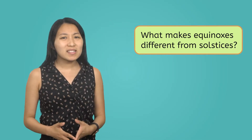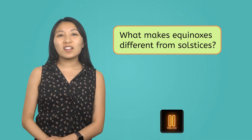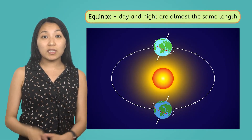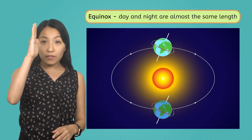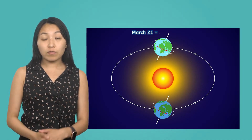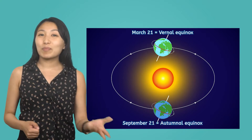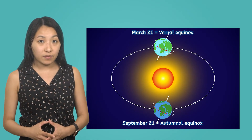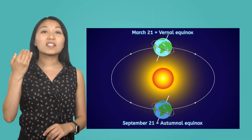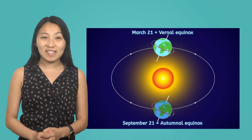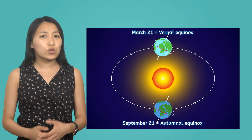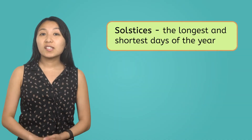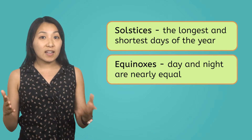So what about equinoxes? What makes them different from solstices? Pause the video and record your thoughts in your guided notes. Equinoxes are the times of year when day and night are nearly equal in length, because the Sun is positioned directly above the equator. In the Northern Hemisphere, these occur around March 21st, which is the vernal or spring equinox, and September 21st, which is the autumnal equinox. In the Southern Hemisphere, these seasons are opposite those of the Northern Hemisphere. Equinoxes happen because Earth's tilt positions the Sun directly over the equator, spreading sunlight equally between the Northern and Southern Hemispheres. This is also why the equinoxes do not have such extreme changes in daylight and night hours at the poles or the equator. To sum up, solstices mark the longest and shortest days of the year, while equinoxes are when day and night hours are nearly equal. Both are crucial for understanding our calendar and the changing seasons.